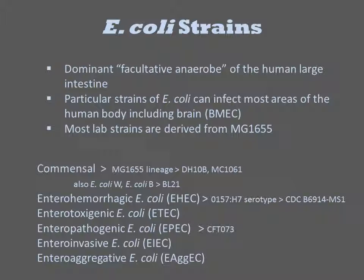Since two strains can share O157 and H7 and still be very different at all other genetic loci, O157H7 is a pattern of commonly co-associated genetic sequences, but does not refer to any specific strain. The designation O157H7 strain CDC B6914-MS1 refers to a specific strain that contains the O157H7 serotype and has a specific genetic composition.